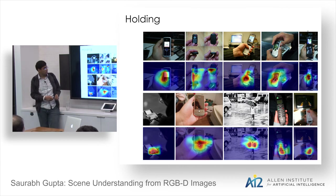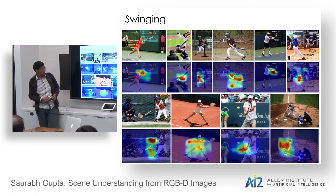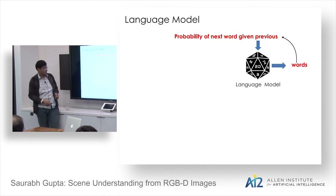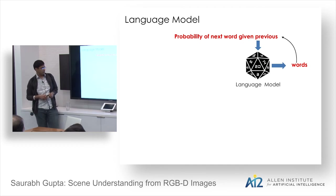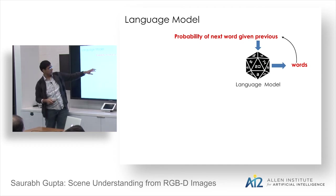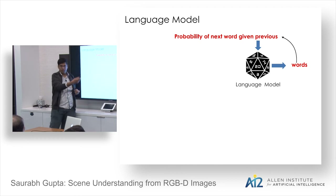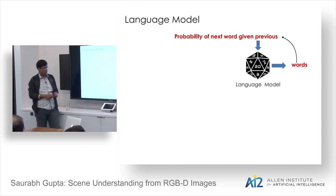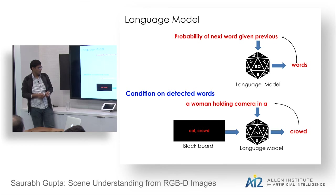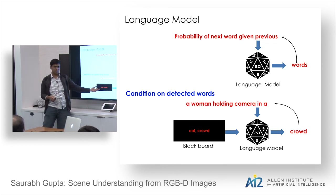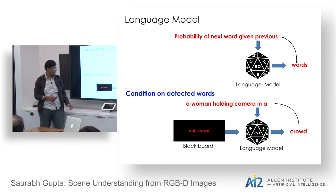VSRL focuses on people doing actions and what objects they are interacting with. Every action has different semantic roles: for the action 'hitting,' there is an actor performing the action, an object being hit (the ball), and an instrument being used (the bat). These form the semantic roles for that action.